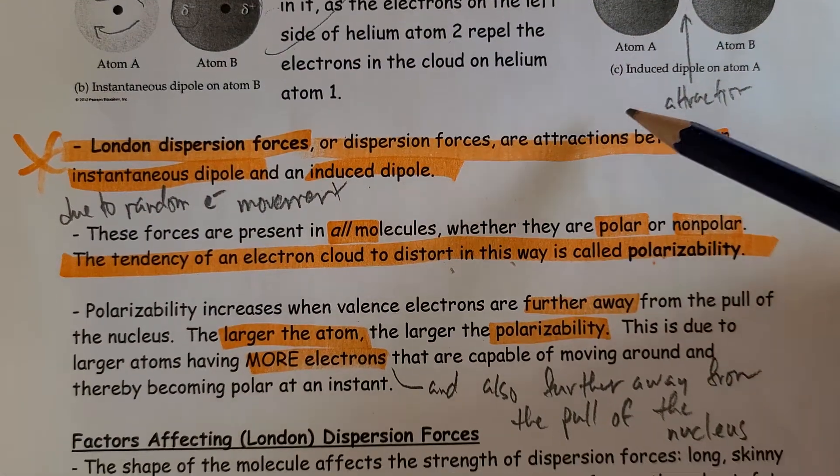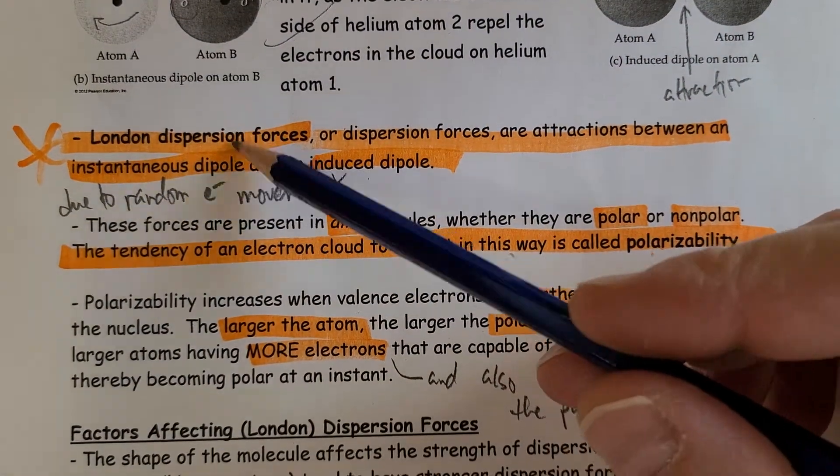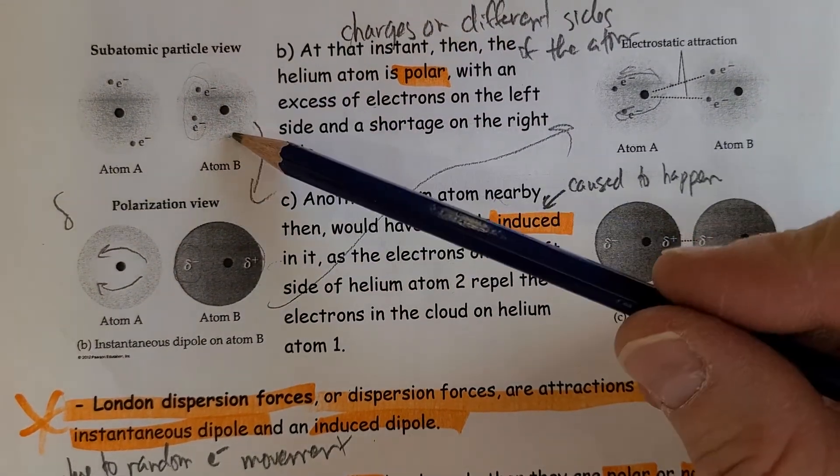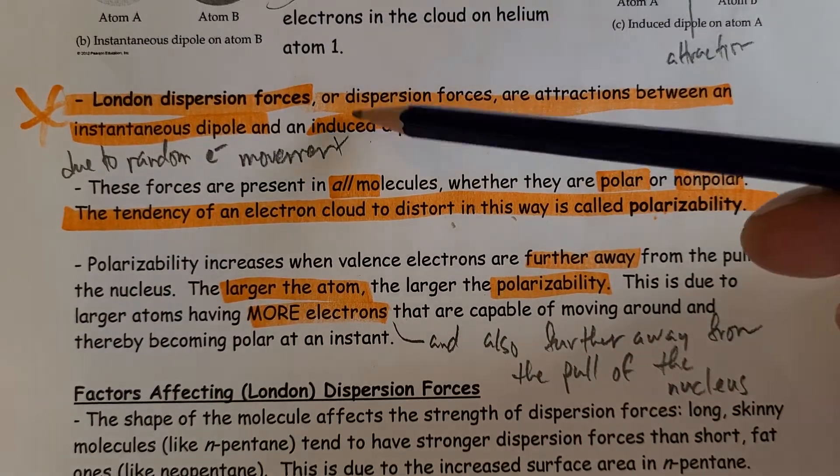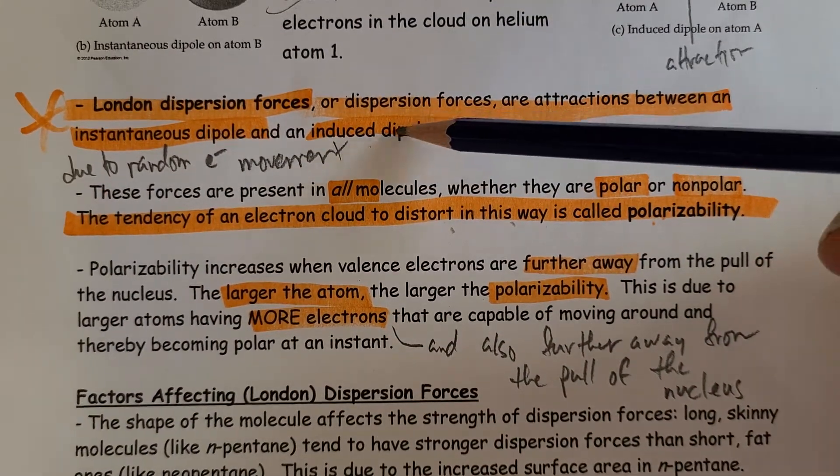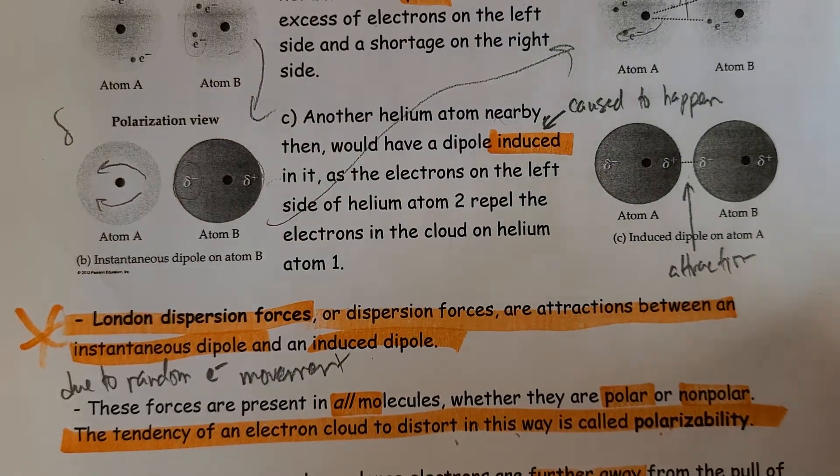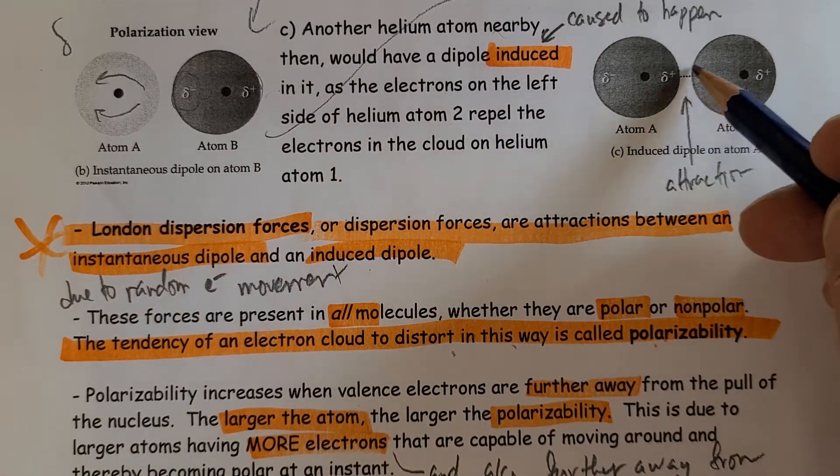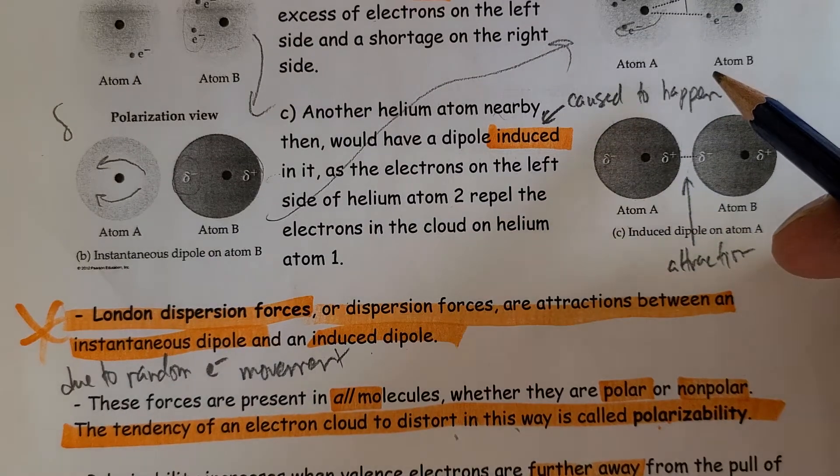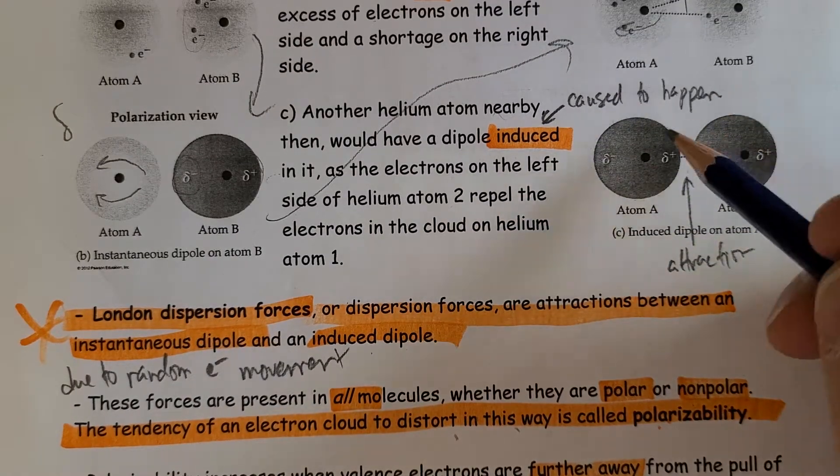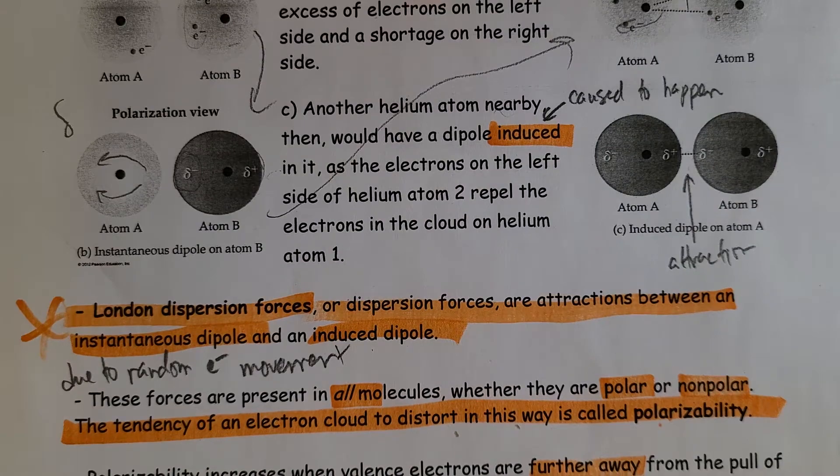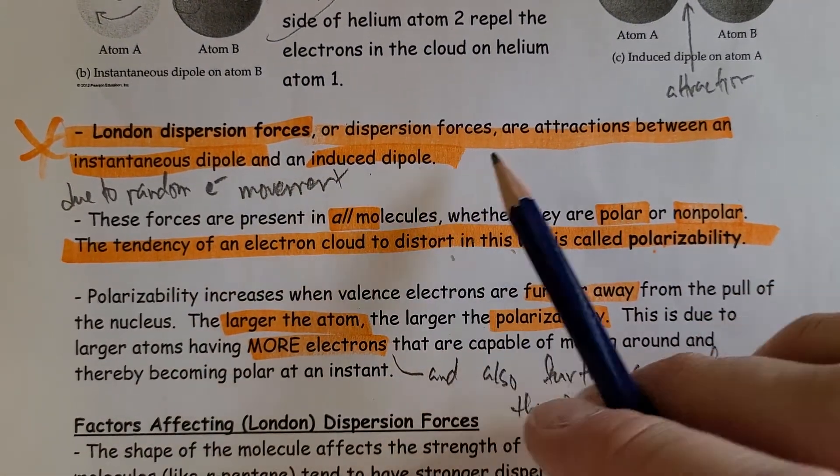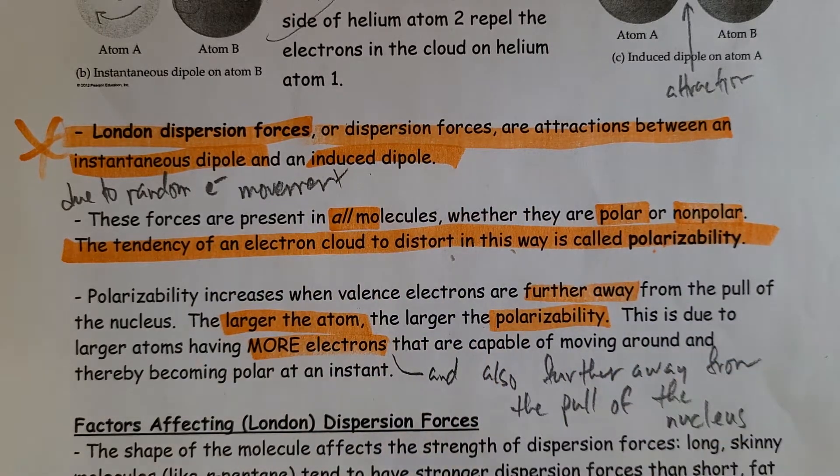Dispersion forces are attractions between an instantaneous dipole, so it becomes a dipole or a separation of charges at an instant, and then it induces or causes a dipole in a neighboring atom or molecule. That positive negative attraction is the intermolecular forces that hold those molecules close to each other.